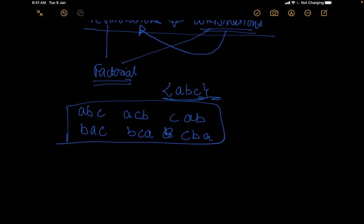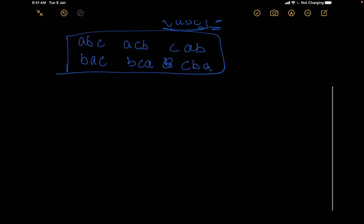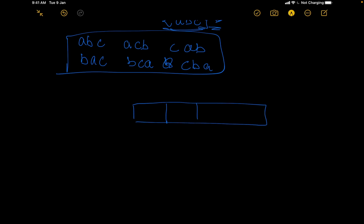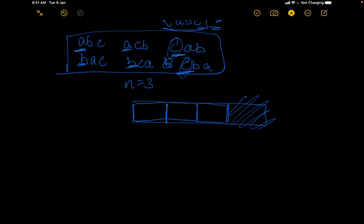This was easy because the number of elements was small — we just had 3 elements. But what if we had 200 elements? There is no way you are going to calculate all the possibilities manually. The way to easily calculate it is to generalize this. So let us say we have n slots. Here our n was 3, so we have 3 slots. The first slot basically means the first character.